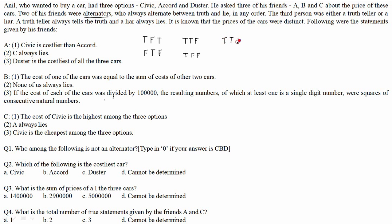A truth teller will always speak truth in all conditions. A liar will always speak false. The third person among A, B, and C was either a truth teller or a liar. So two of the three are alternators, and one person is either a truth teller or a liar.